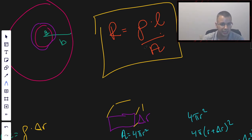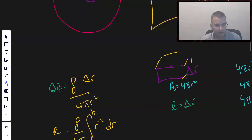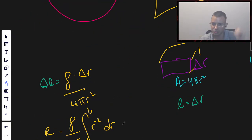So, we plugged it into r. We said a small bit of resistance is this, integrated from A to B. Got an answer. Hope that helped. See you next time.